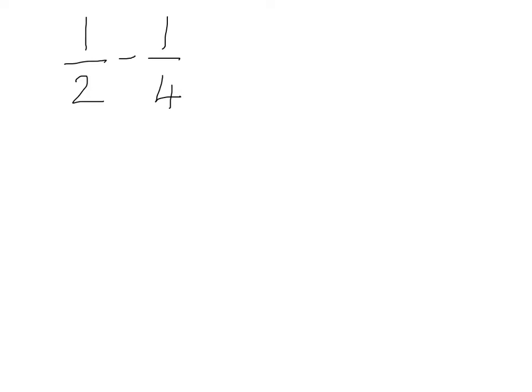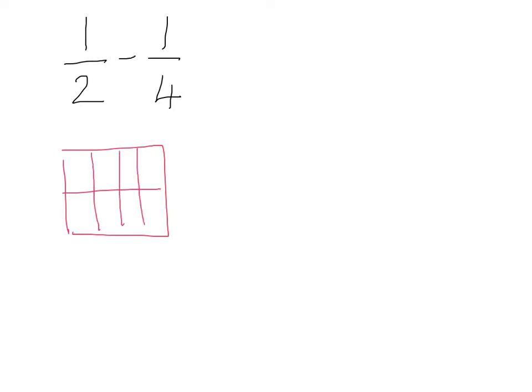Let's try our first example: one half minus a quarter. We're going to do it first with the area model, and then I'll show you that the area model and the rule give exactly the same answer. Looking at my two denominators, I know the number of floors and rooms. My building has two floors according to the first denominator, and then it has four rooms. I draw two identical diagrams for this.